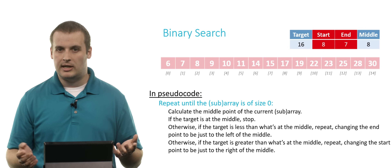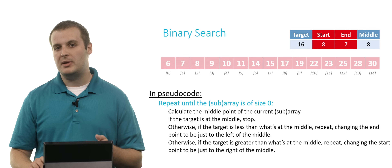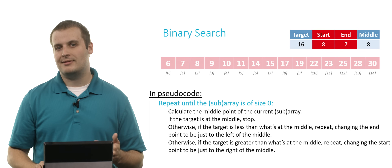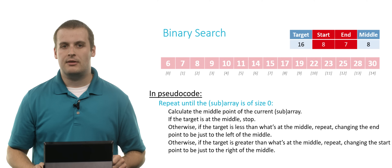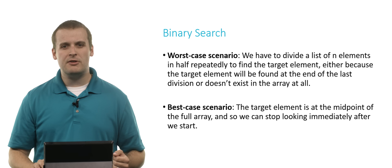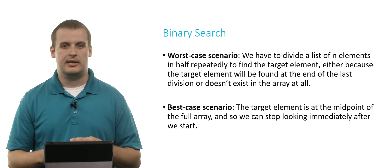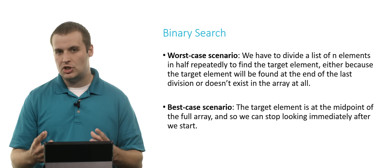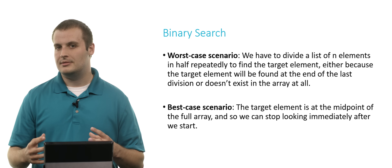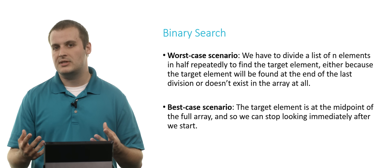It's only when the start and end points cross that we can guarantee the element does not exist in the array. This took far fewer steps than linear search. In the worst case, we had to split a list of n elements repeatedly in half to find the target — either because the target is in the last division or it doesn't exist at all. In the worst case, we have to split the array log n times.